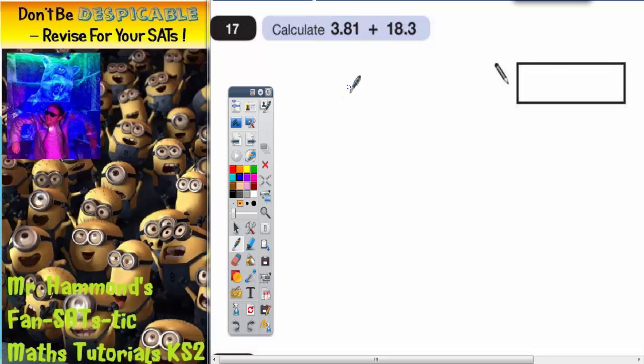So what we're going to do is do a column method. They've deliberately written the numbers side by side to tempt people to do it in their heads. What we're going to do is write one number on top of the other.